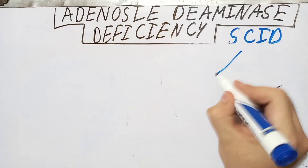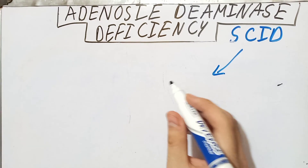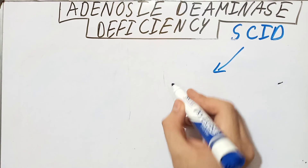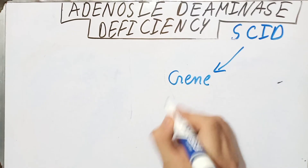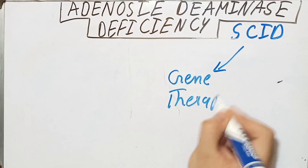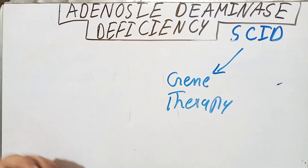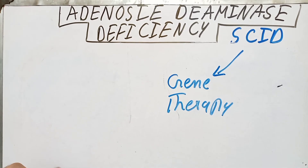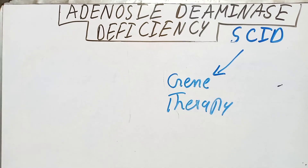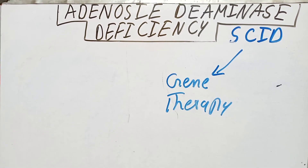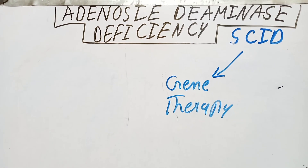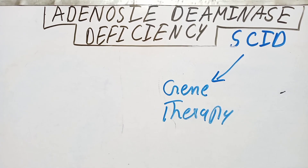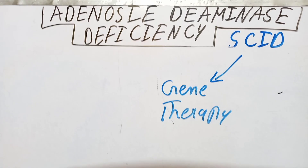Severe combined immunodeficiency syndrome is one of the few diseases that has been successfully treated by gene therapy — the details of which are a topic for another time. That concludes our discussion of adenosine deaminase deficiency. In the next video, we will talk about the metabolism and synthesis of pyrimidines. Thank you and see you in the next video.